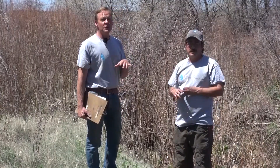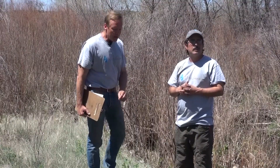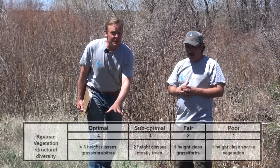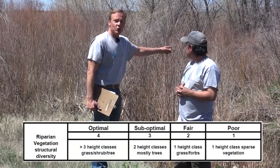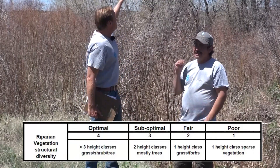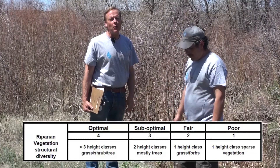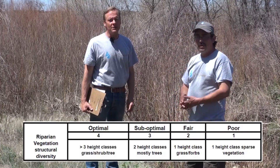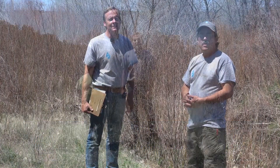In this particular area on the Santa Fe River, because we have a low height class of grasses and forbs, we also have shrubs, and we also have trees — this would score very well. This would get a score of four, on a scale of zero to four, four being optimal or excellent.